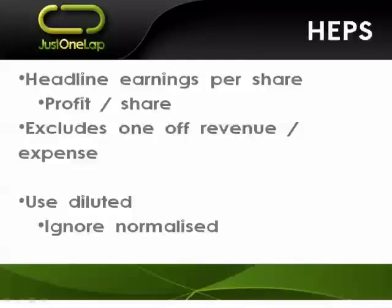Starting with headline earnings - although we probably all know what it is, there's a very important nuance. Headline earnings, or profit per share, is the company's profit divided by number of shares. But it's headline earnings rather than just earnings per share because the headline means they've removed extraordinary items. Those extraordinary items could be, for example, selling a business - that's technically income but you exclude it from headline earnings. Or maybe they bought a competitor - that's an expense but also excluded. Headline earnings represents the going concern of the business.